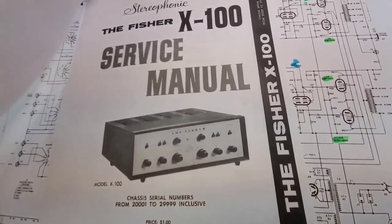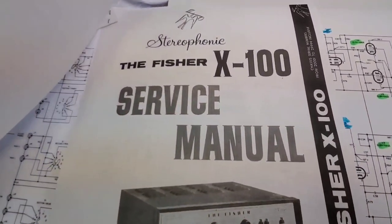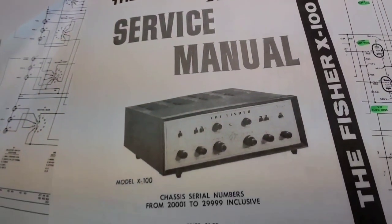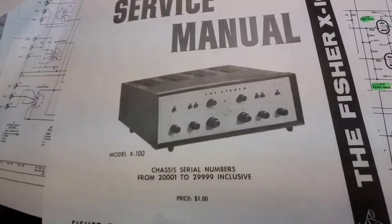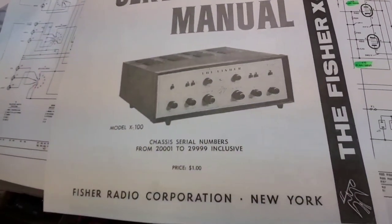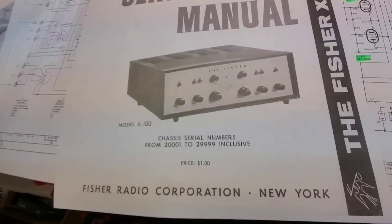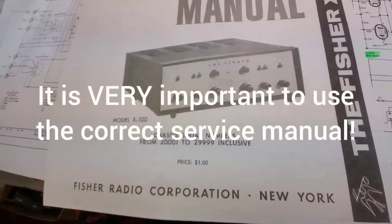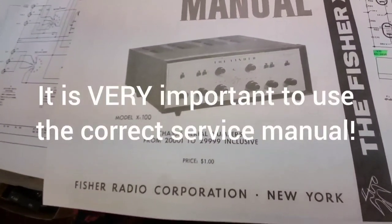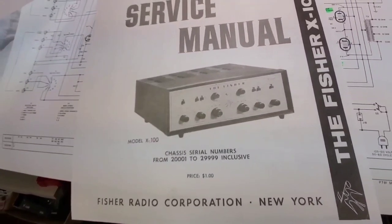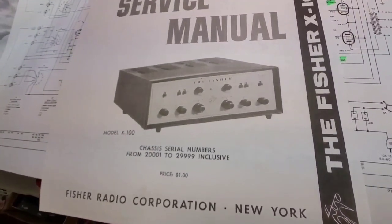This one we're going to look at today is an X100 integrated amplifier. That's the picture of it on the manual. This is the serial numbers this manual is good for, and there could be changes depending upon if it's an earlier unit or a later unit.